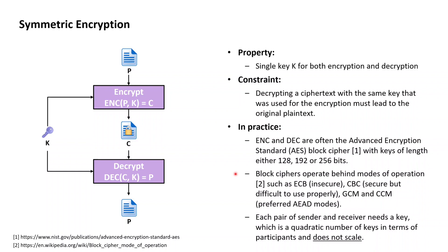Looking again at the flow chart, in order for a pair of a sender and receiver — let's call them Alice and Bob — to use symmetric encryption to encrypt data between them, both Alice and Bob need to be in possession of the same symmetric key K. If you consider a system with multiple participants, then using symmetric encryption would require each pair within the group to have a dedicated symmetric key, which is a number of keys quadratic to the number of participants — a number that very soon becomes infeasible, and as such symmetric encryption systems do not scale well with respect to the number of participants.